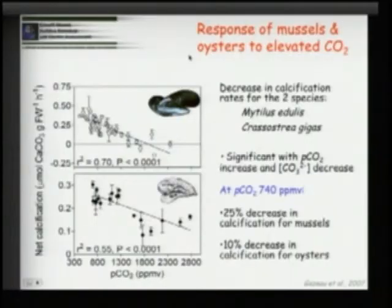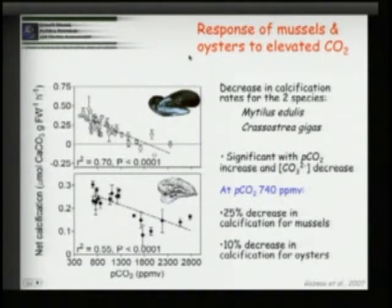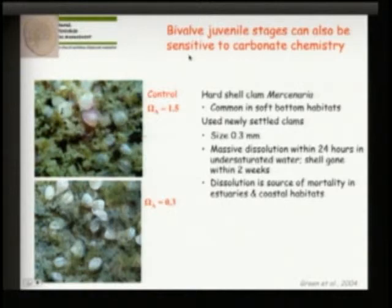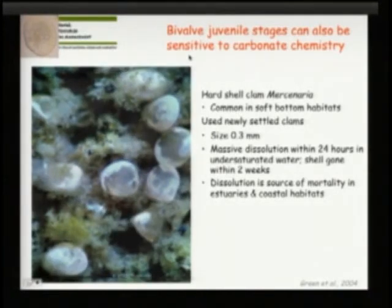Closer to home, we look at effects on mussels and oysters, and see the same decreasing calcification — anywhere from 10% to 25% with increasing CO2 levels. For juvenile species like clams, when they first form, within 24 hours there is massive dissolution of the shells — visible as a whitening — and within two weeks the shells are gone and the animals have died. We can see this process in real time along our coast in New England.